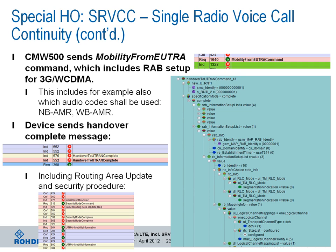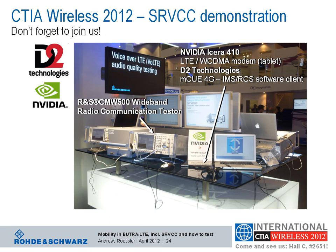After receiving the measurement report, the CMW500 sends the 'Mobility from EUTRA' command to transfer the device from LTE to 3G, which includes the radio access bearer setup for 3G wideband CDMA. The radio access bearer setup includes many details, such as which audio codecs shall be used for the voice call — for instance narrowband AMR or wideband AMR. Afterwards, the device sends the handover complete message and performs a routing area update and acquires new security keys. This is the whole procedure for transferring an IMS voice call from LTE to 3G while maintaining the call and setting it up in the circuit-switched domain.